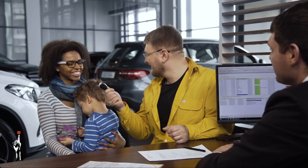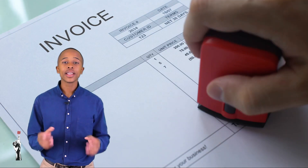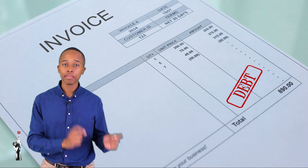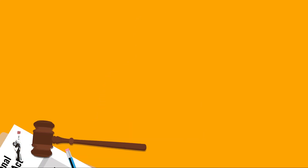So what is a debtor? When a business sells its goods or services on credit to someone else or to a customer, that person, business, or customer is known as a debtor. In other words, a debtor is someone that owes your business money.